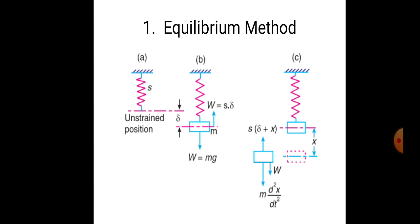At equilibrium, S·δ is equal to mg. Now in the third case, when we apply a particular force — M·d²x/dt² — and W is the weight, S·(δ + x) is the total displacement of the body. The dotted line shows the extreme position. Two forces are acting: M·d²x/dt² (the inertia force) and W, the weight of the body. These are the three positions related to the equilibrium method.